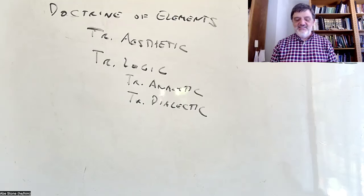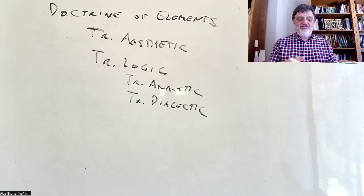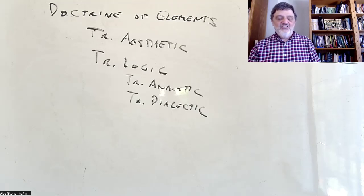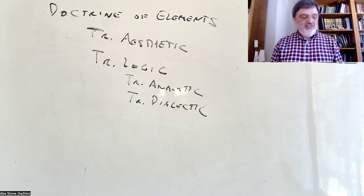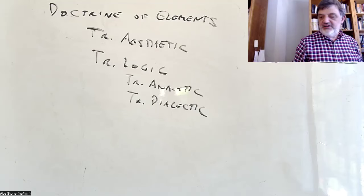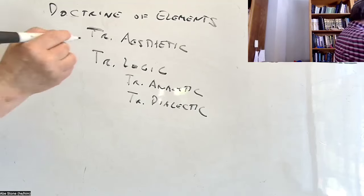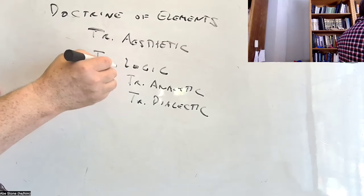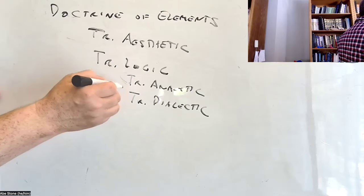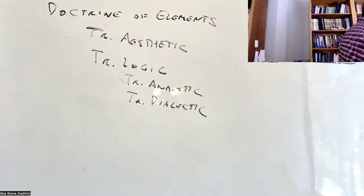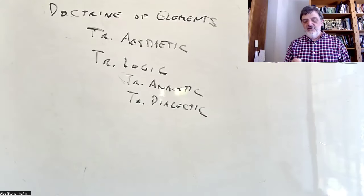Kant is not going to teach you how to achieve logical illusions — he's going to teach you how to correct them. The reading for today was the end of the Transcendental Aesthetic and the introduction to the Transcendental Logic as a whole, and the introduction to the Transcendental Analytic. Next time we'll start the first part of the Transcendental Analytic: the Analytic of Concepts.